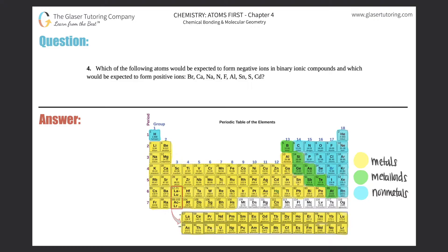Number four: which of the following atoms would be expected to form negative ions in binary ionic compounds and which would be expected to form positive ions? They gave us the atoms: Br, Ca, Na, N, F, Al, S, N, S, and Cd.